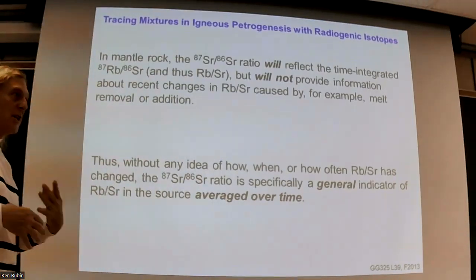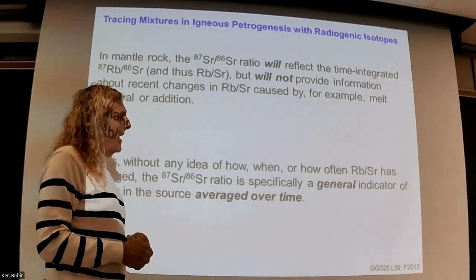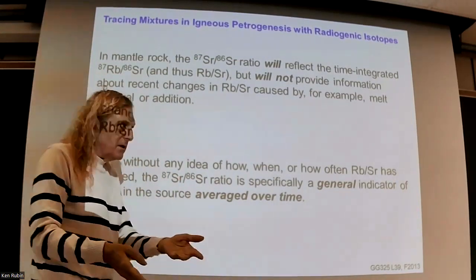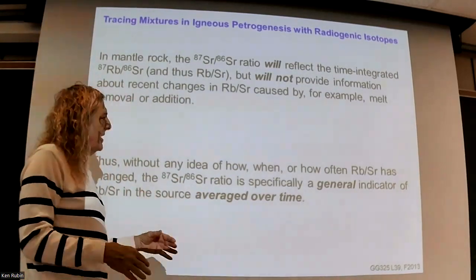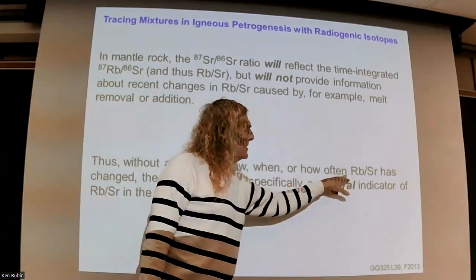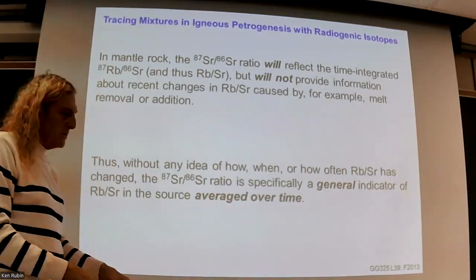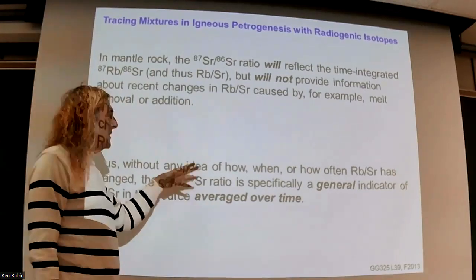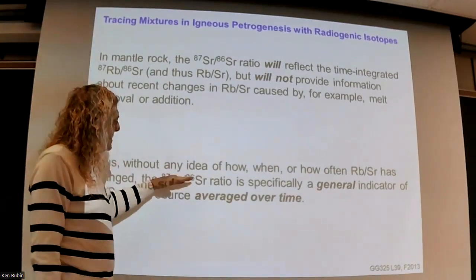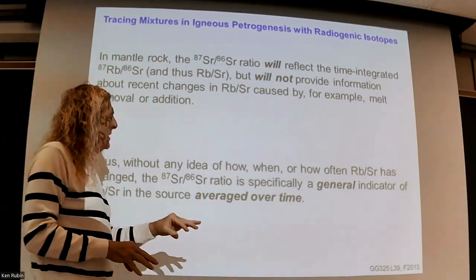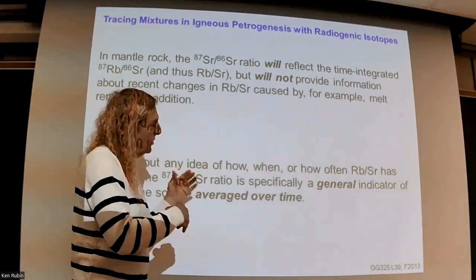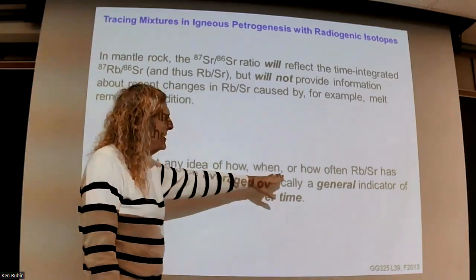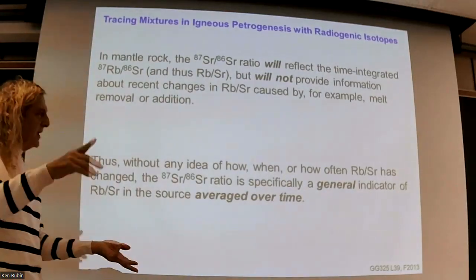We can predict how much variation we'd expect in one ratio given another over a certain amount of time — they won't be related one-to-one because the rate of decay and the Rb/Sr ratio includes all the strontium isotopes. If we see more variation in one ratio than predicted from another, that's telling us something else has happened. If we see less, the fractionation may have happened more recently. This way we can disentangle using systematic variations of isotope ratios whether the heterogeneity is attributable to long-lived source features.